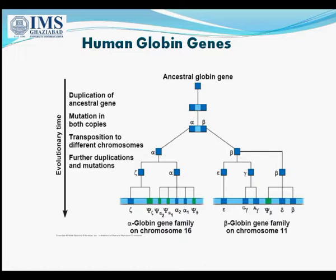As we can see here, an ancestral globin gene was duplicated and two identical copies were formed. Further mutations accumulated in these genes, leading to a slight change in their composition and the formation of the alpha and beta genes. Later, the alpha and beta genes were transposed to different chromosomes.